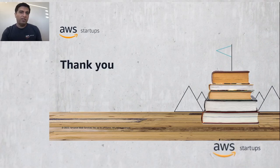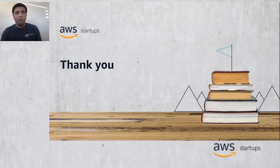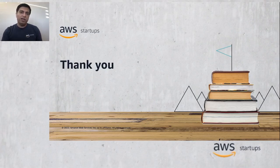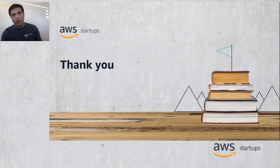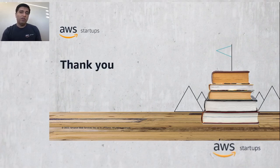This brings us to the end of this episode. The information shared here is just the tip of an iceberg. To learn more about modern data architecture, please watch other episodes of this series and check out the links shared below. In the next episode of Analytics Byte series, we'll talk about how to train, tune, and deploy machine learning models using SageMaker, and discuss various reference architectures showing how to integrate SageMaker in modern data architecture use cases. Thank you again for joining this episode of Analytics Byte series. We'll see you in the next one. Goodbye.